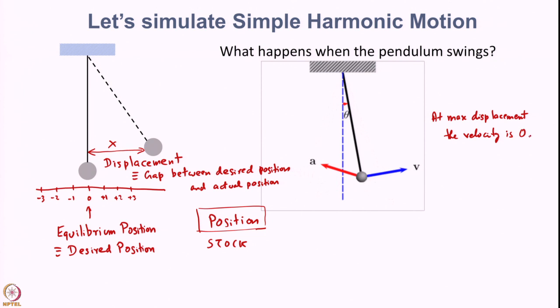The change in displacement is nothing but velocity. So dx/dt — the change in displacement over time — is defined as velocity, and at maximum displacement the velocity is 0. And at the equilibrium position, velocity is also 0.